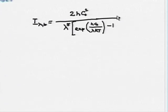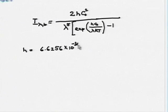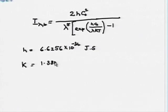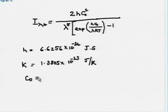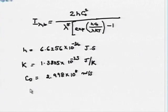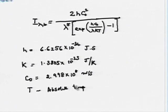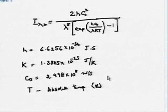This is Planck's distribution. h is the universal Planck's constant: 6.6256 × 10⁻³⁴ J·s. k is the universal Boltzmann constant: 1.3805 × 10⁻²³ J/K. c₀ is the velocity of electromagnetic waves in perfect vacuum: 2.998 × 10⁸ m/s. T is absolute temperature — one important thing in radiation is that temperature is always in Kelvin. If we use degrees Celsius, the result will be completely wrong.